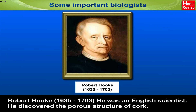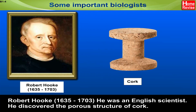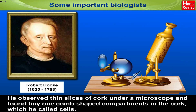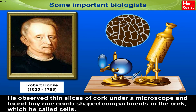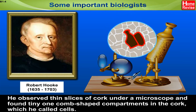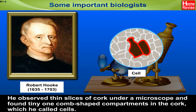Robert Hooke (1635–1703) was an English scientist. He discovered the porous structure of cork. He observed thin slices of cork under a microscope and found tiny honeycomb-shaped compartments in the cork, which he called cells.